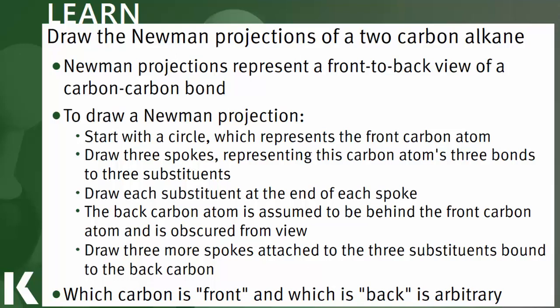I promised that we would come back to this very detailed set of instructions at the end as review, and we can see it's not so intimidating now. We're going to start with a circle. That circle represents the carbon that we're looking at. We draw the three bonds coming off of that to the three substituents that we can see. And then we go ahead and actually label those substituents.